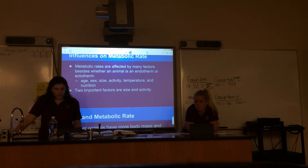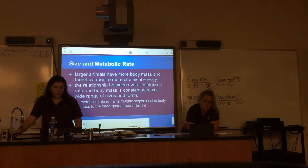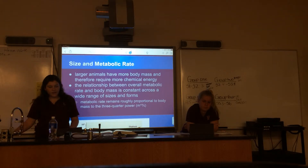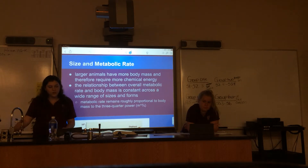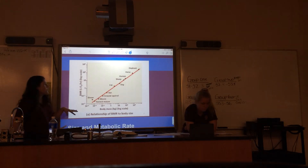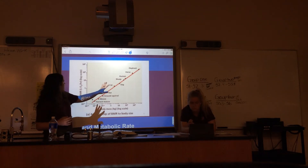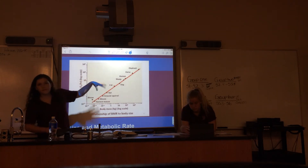Metabolic rates are affected by many factors besides endothermy or ectothermy, including age, sex, size, activity, temperature, and nutrition. Two of the most important are size and activity. Larger animals have more body mass and require more chemical energy, and the relationship between overall metabolic rate and body mass is constant across a wide range of sizes — metabolic rate remains roughly proportional to body mass to the three-quarter power. As an animal gets bigger, the BMR and energy cost increases.